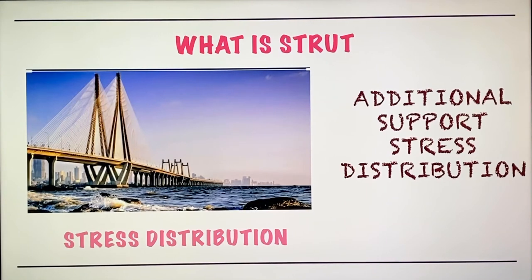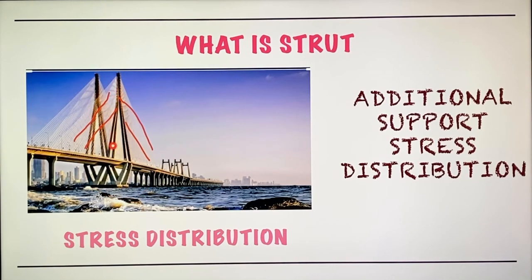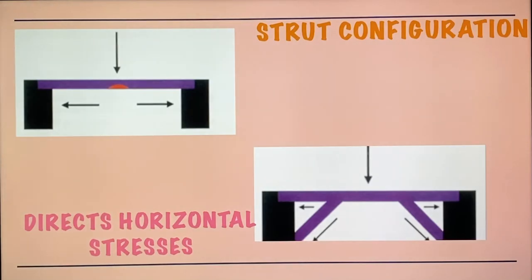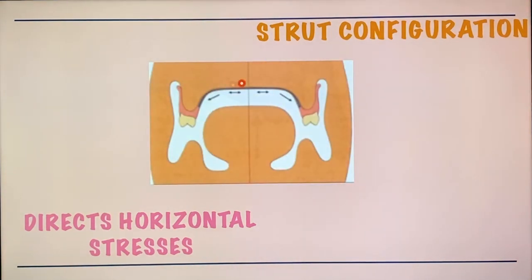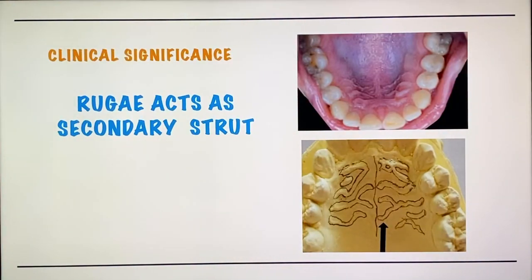The second principle is strut configuration. A strut refers to strands — you can see a bridge has strands on it that help provide additional support and also help to distribute stresses. Strut configuration says it helps to direct horizontal stresses in the lateral direction in the area of the support, or you can say in the area of bone. This configuration is helpful in the part of the rugae, as the rugae act as a secondary strut that helps in stress distribution.